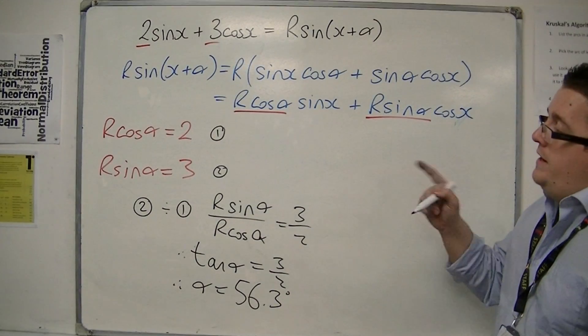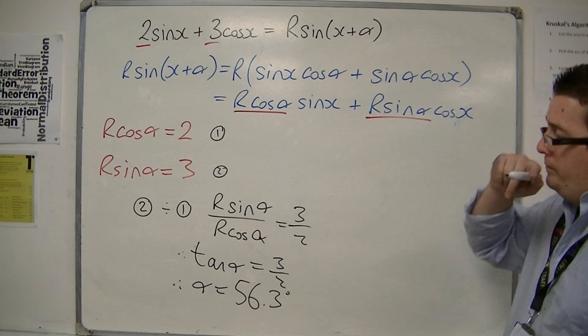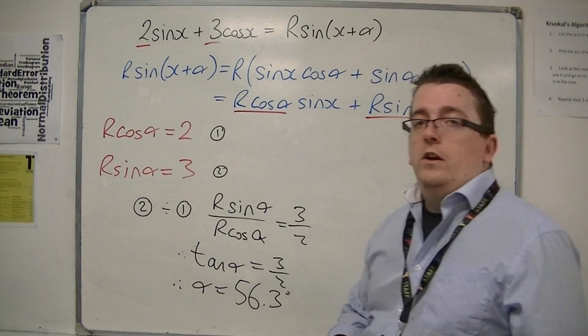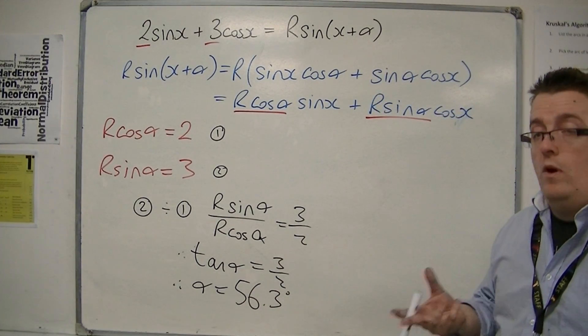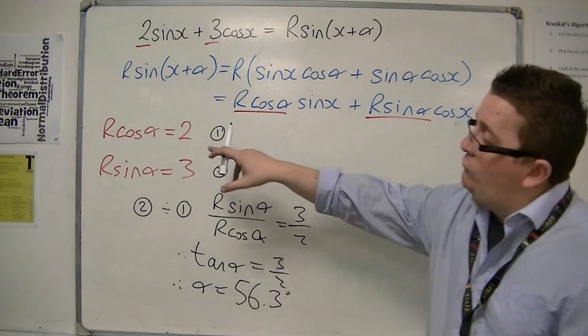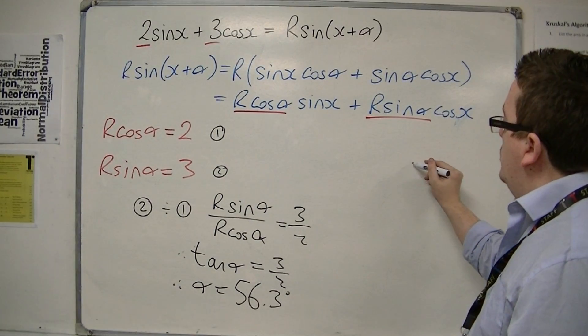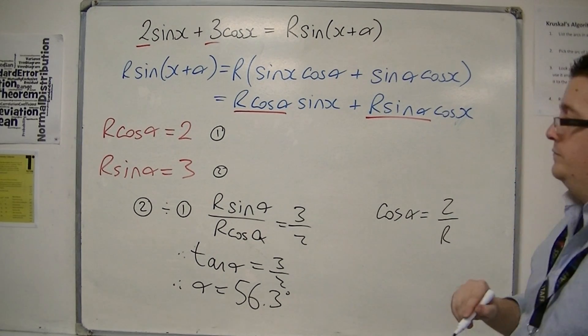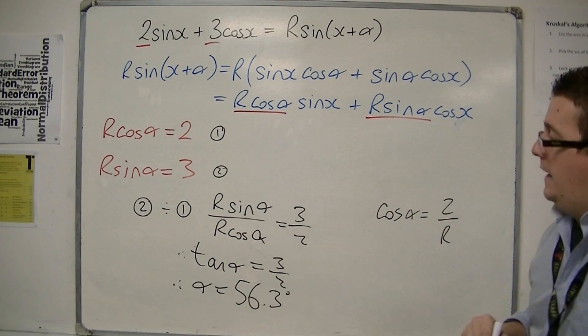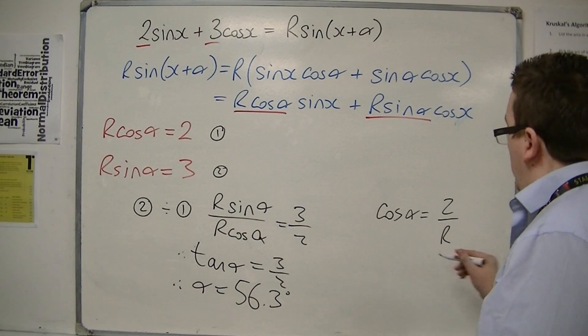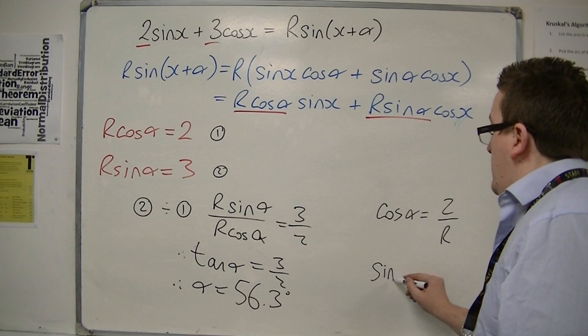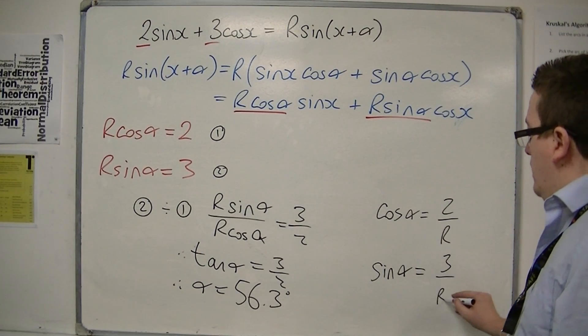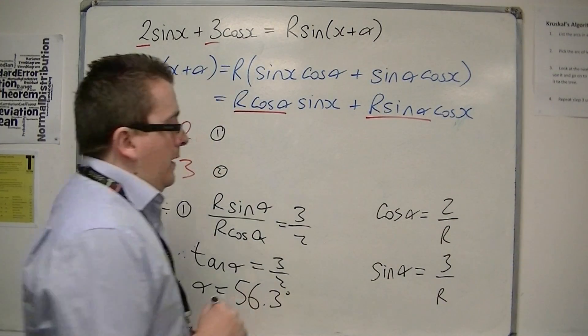Then I need to work out what r is. Now, r can be found in a couple of different ways. If I rearrange equation 1, then cos α is 2 over r. And likewise, if I rearrange the second equation, sin α is 3 over r.